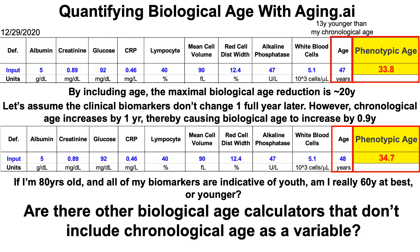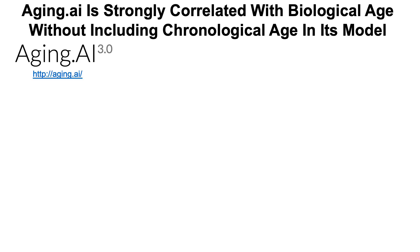With that in mind, are there other biological age calculators that don't include chronological age as a variable? I'm still a big fan of Levine's phenotypic age calculator and will continue to use it. I just think it's important to use a variety of tools. Aging.ai is one such tool — it's strongly correlated with biological age without including chronological age in its model. You can find it at aging.ai for free; just enter your blood test data and it'll give you a readout of your biological age.